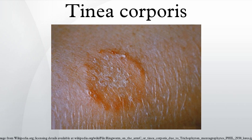Prognosis: Tinea corporis is moderately contagious and can affect both humans and pets. If a person acquires it, the proper measures must be taken to prevent it from spreading. Young children in particular should be educated about the infection and preventive measures: avoid skin-to-skin contact with infected persons and animals, wear clothing that allows the skin to breathe, and don't share towels, clothing, or combs with others.